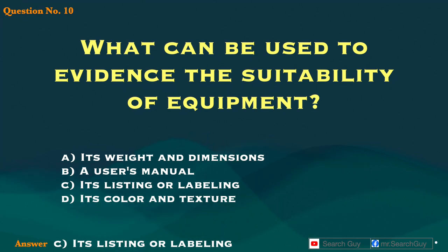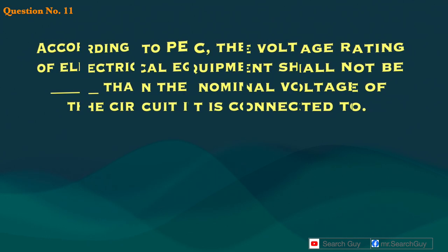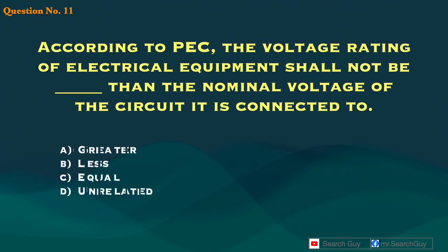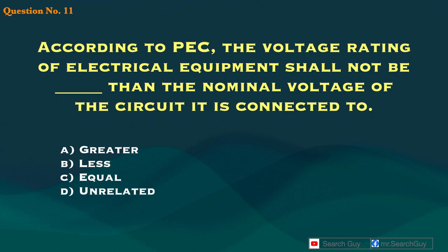Question 11. According to PEC, the voltage rating of electrical equipment shall not be blank than the nominal voltage of the circuit it is connected to. A. Greater. B. Less. C. Equal. D. Underrated.